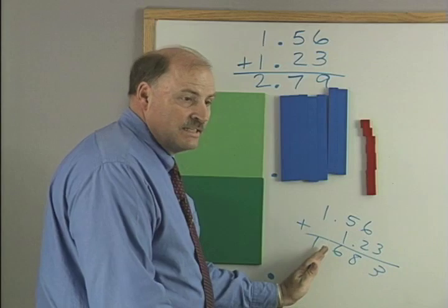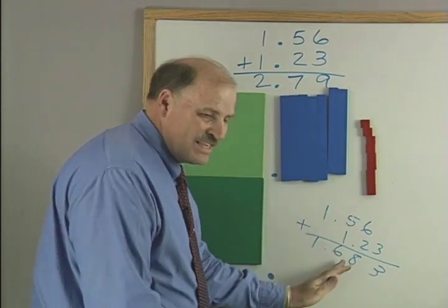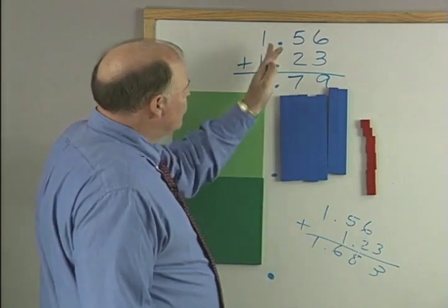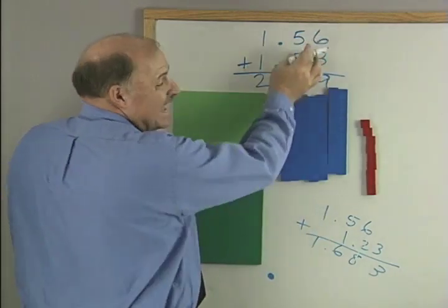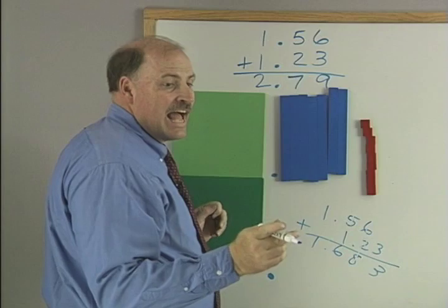And so what they tell them is, if you line up the decimal points, then you will be able to add units to units, tenths to tenths, hundredths to hundredths, right? So always remember to line up the decimal points so that you're adding the same kind. To compare, combine, you must be the same kind.